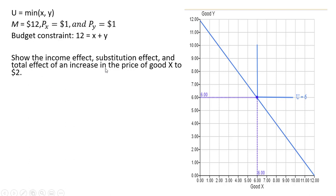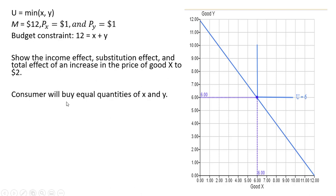We want to show the income effect, substitution effect, and total effect of an increase in the price of good x to $2. First, before the price increase, the consumer will buy equal quantities of good x and good y based on this utility function. We just set what's in parentheses equal to each other, so x equals y.